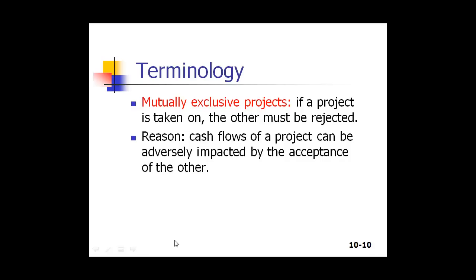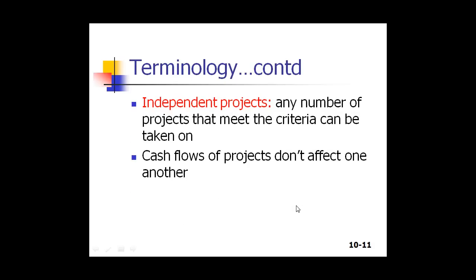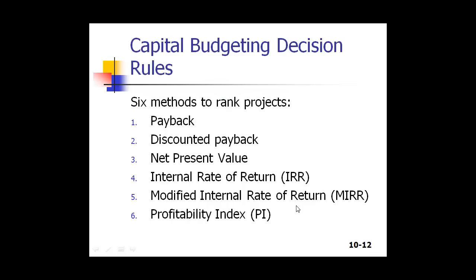The classic textbook example is: if you need to transport goods within your factory, either you install a conveyor belt or you buy a fleet of forklift trucks — it doesn't make sense to do both. Independent projects, as the term implies, are projects where you can do multiple projects and doing one doesn't impact the decision on whether to do another.